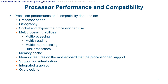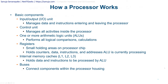Not all processors have the same features. For example, overclocking may not be possible on every processor, and not all processors have the same type of cache. These differences depend on the processor type — whether it's a server, desktop, or laptop processor. Processor performance and compatibility depends on all of these key items.